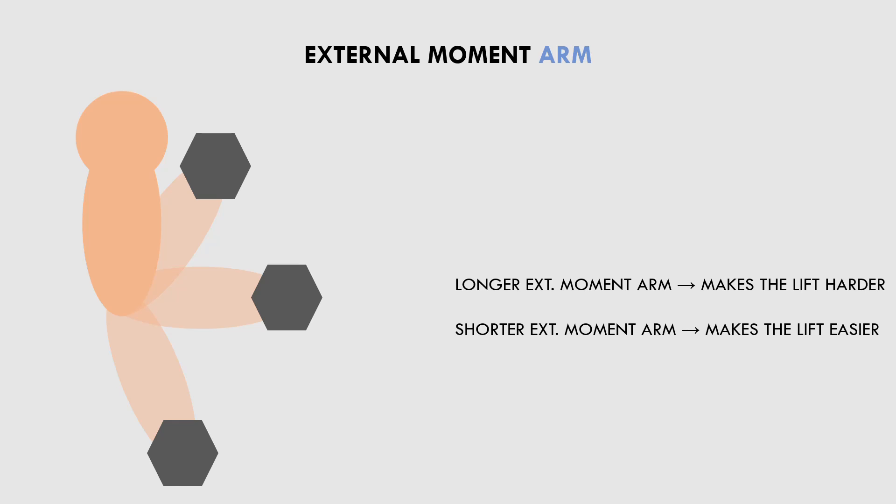For example, during a bicep curl, we can see that the load has a shorter moment arm at the top and bottom position of the lift, but a longer moment arm when the forearm is parallel with the ground. This means that more force is required to lift the load through the mid-range compared with the start and end of the lift.